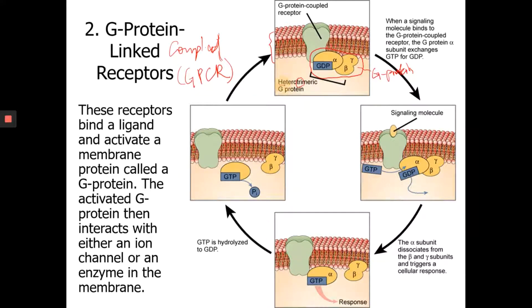Now heterotrimeric G-protein just means they are different. So you see they have different names: the alpha, the beta, gamma, they're all different.